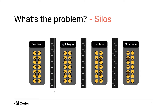The main problem, if I haven't alluded to it enough, is silos. We have all these happy faces in each team — developers, QA, security, and ops — but we have these huge walls between them. In this process, a developer might go through and say, 'My code's ready, I pushed it up, ship it off to the QA team for testing.'